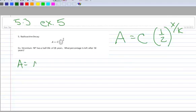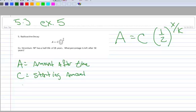Let's just go through what these things mean. So A is the amount, and that's the amount normally after some time, so amount after time. C is going to be our starting amount.